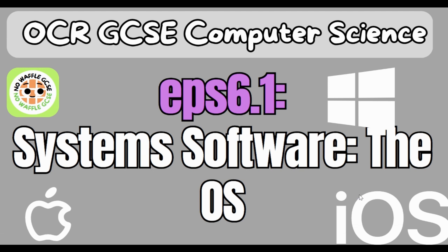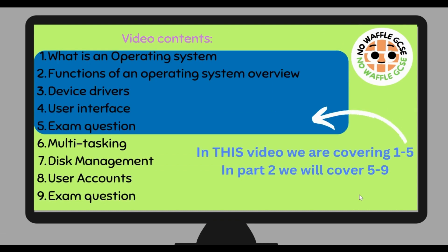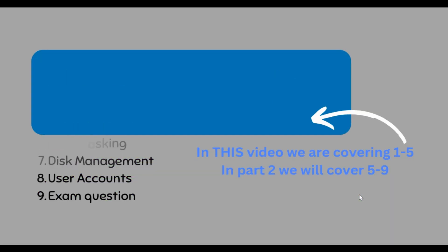OCR GCSE Computer Science. In this half of episode six, we will be looking at system software — the operating system. Because this topic is quite big, we're going to be covering bullet points one to five: what is an operating system, the functions of an operating system, device drivers, and user interface, on top of some exam questions. We'll look at six to nine in the next video in part two.